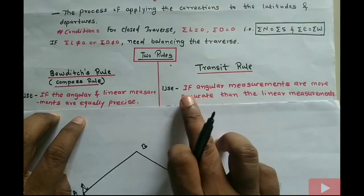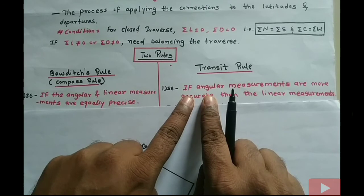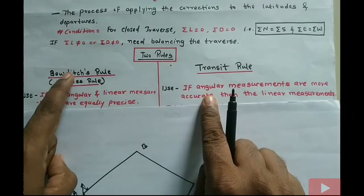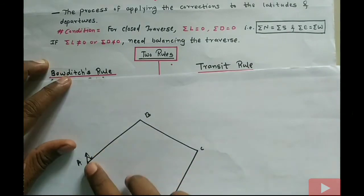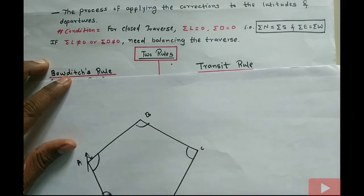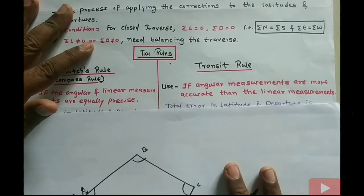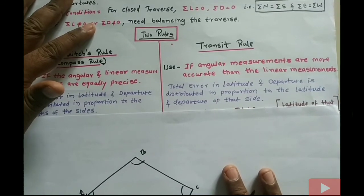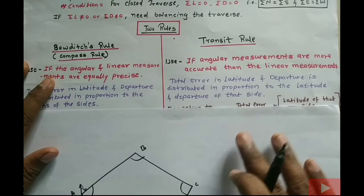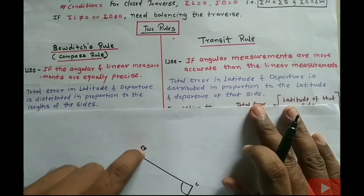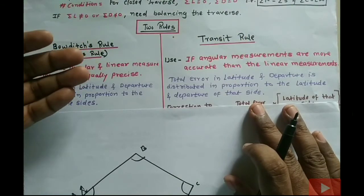The transit rule is used when angular measurements are more accurate than linear measurements. This is frequently asked in online exams — one option is when to use the transit rule versus the Bowditch rule. If the angular measurements (angles found in the traverse) are more accurate than linear measurements, we use the transit rule. This applies when we find whole circle bearings, reduce them, and then find latitudes and departures of each line.